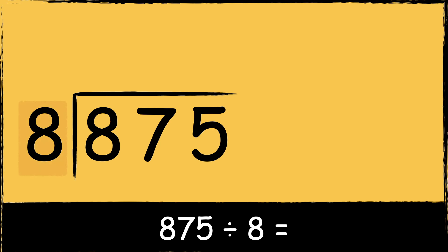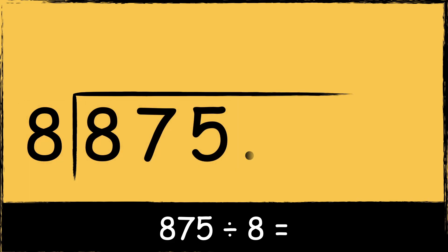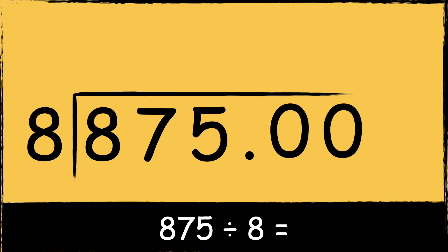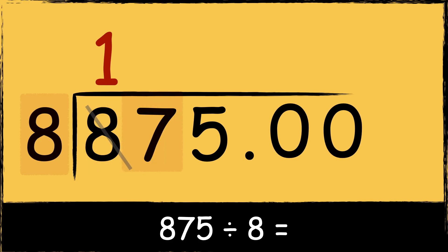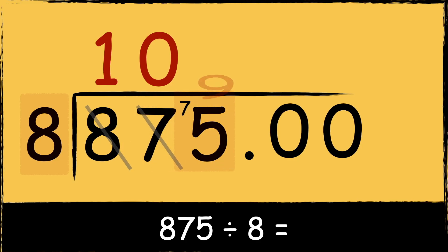We need to find out how many times the divisor fits into these numbers. Remember we need to place a decimal point and some zeros after the divisor. Eight goes into eight once. Eight doesn't go into seven, so we need to show that by using zero as a placeholder and then having seven left over.